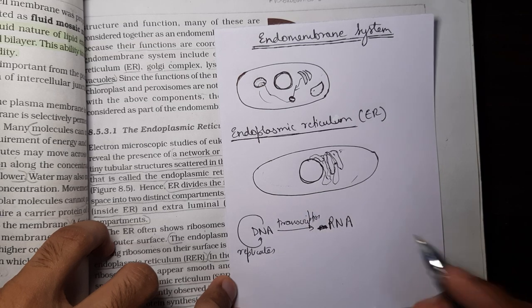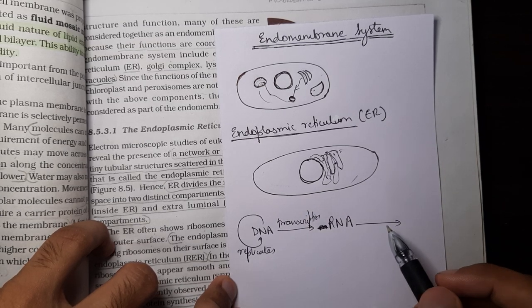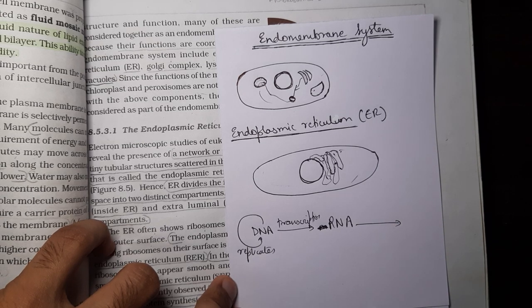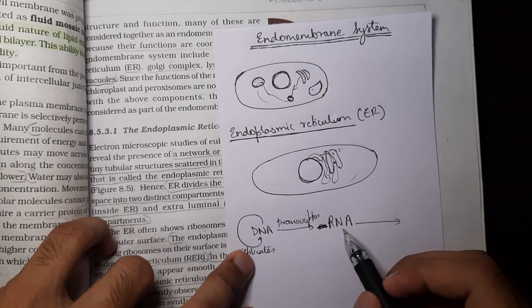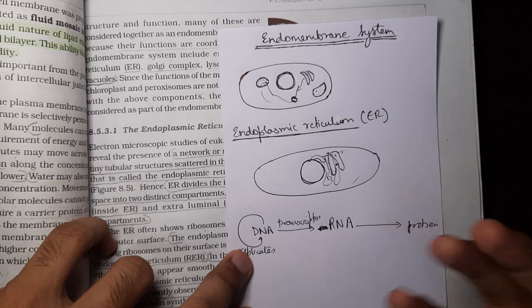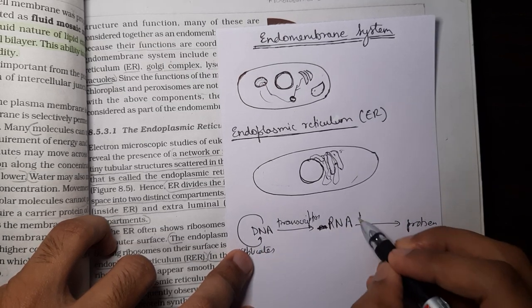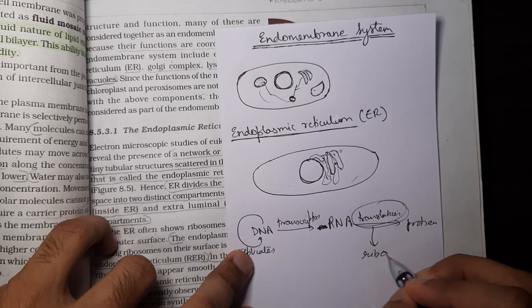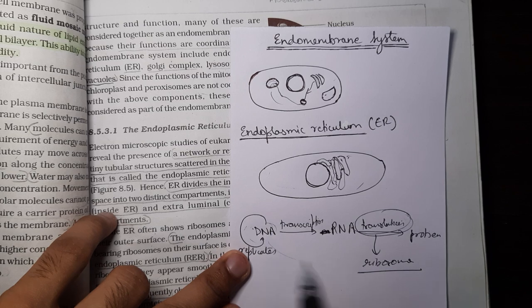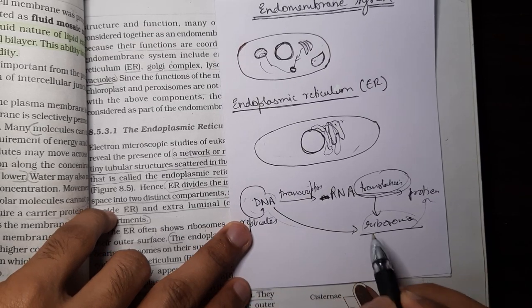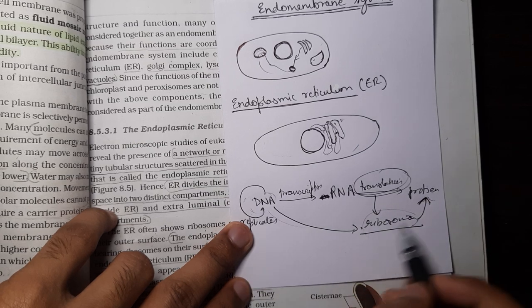We are going to go in depth into this in the Class 12 chapter on molecular biology, which comes right after principles of inheritance. RNA then forms protein, and the DNA is being used to produce protein because the cell knows what protein it needs from the DNA. This translation is done by ribosomes.